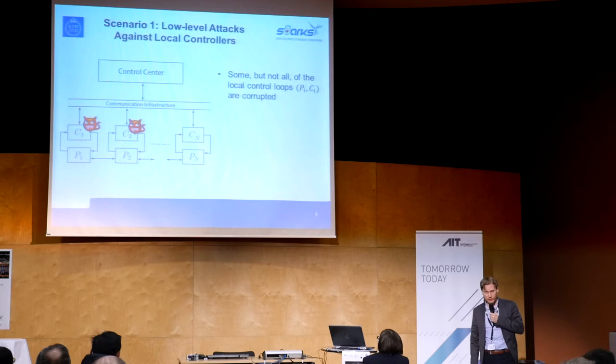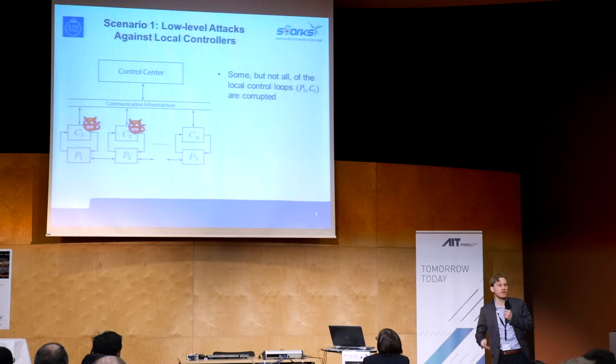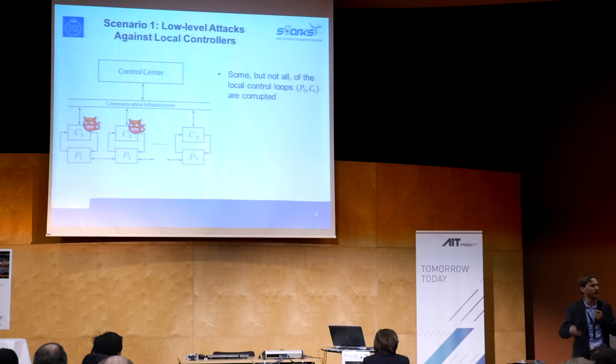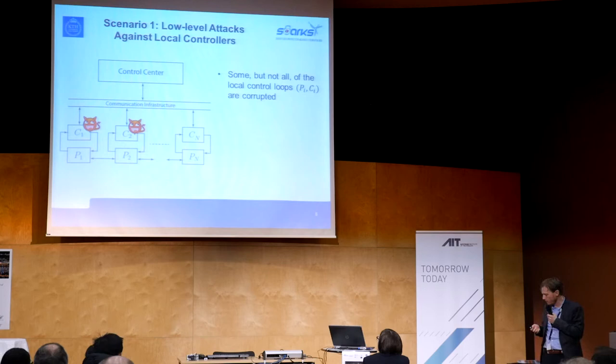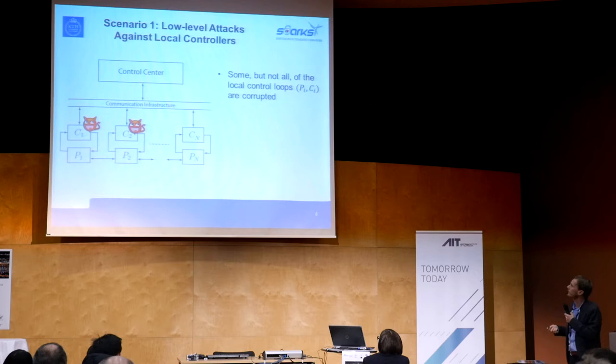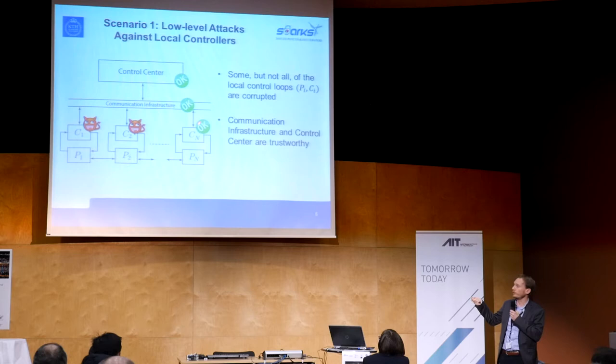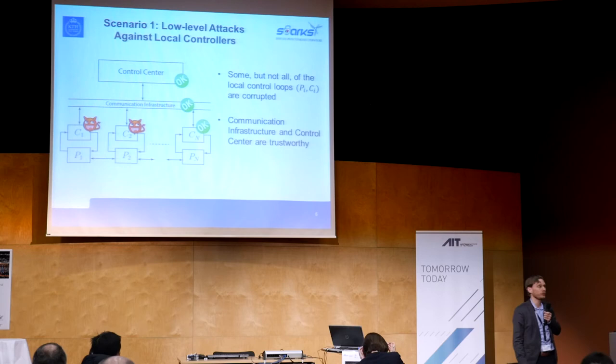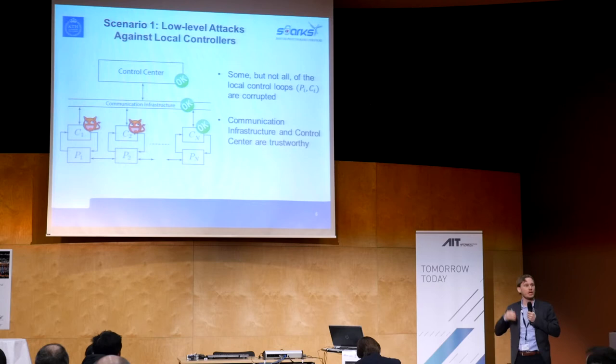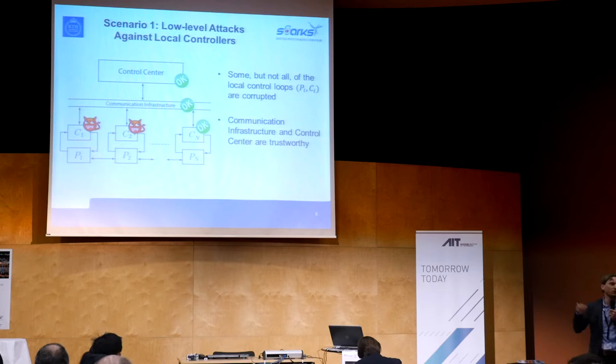In the first scenario, we assume that some of these local controllers have been infected — think of a Stuxnet-type infection where the PLC has been corrupted and is not performing the tasks we think it should. The assumption we make is that at least one of the local controllers is okay and can communicate reliably to the control center. This is where physics is important: because these are physically interacting systems, if we have one good measurement, we can estimate what should be happening elsewhere. A person in the control center should have a good idea of what's happening at the local level, and that's what we exploit to obtain resilience.